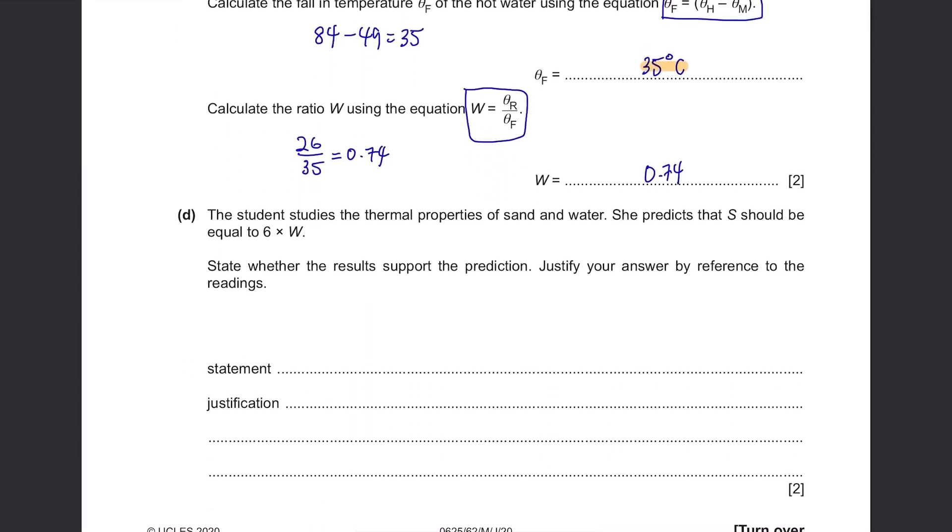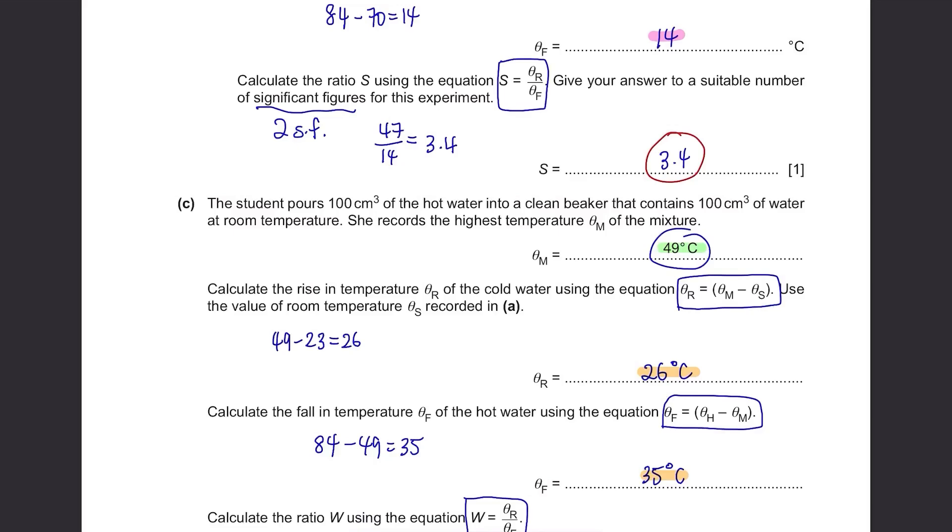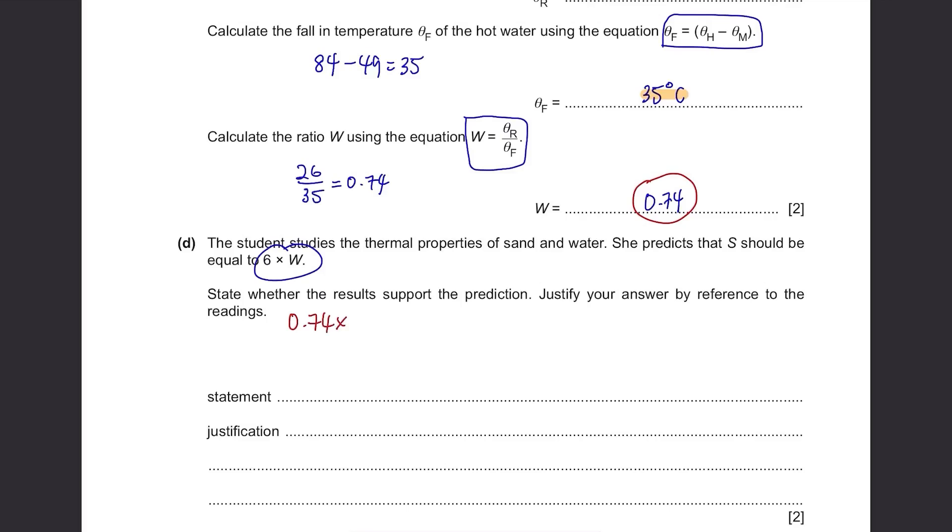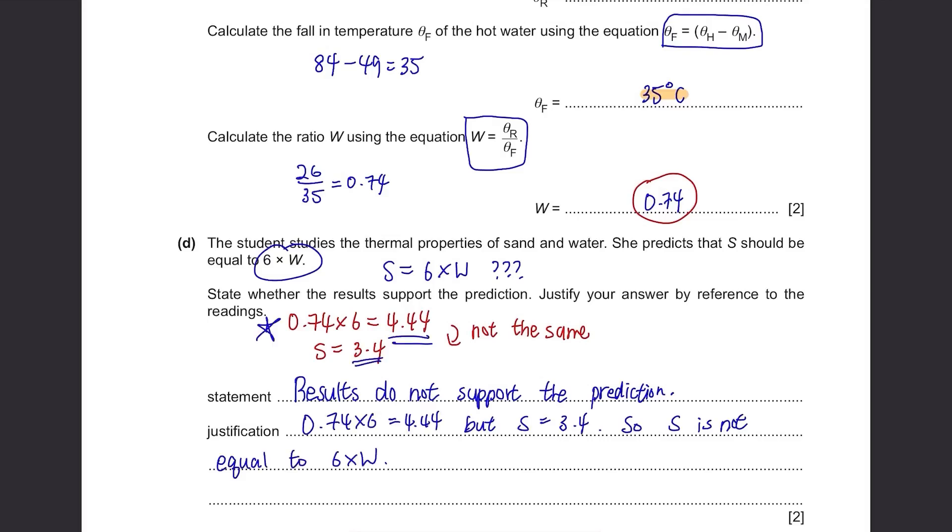Part D. The student studies the thermal properties of sand and water. She predicts that s should be equal to 6 times w. State whether the results support the prediction. Justify your answer by reference to the readings. We calculated s just now and it was 3.4. W was 0.74. While if you multiply 0.74 with 6, you get 4.44 which isn't very close to 3.4. So you can say the results do not support the prediction. Justification is that if you multiply w with 6 which is 0.74 times 6, it's 4.44 but the value of s is 3.4 so the values do not match. This answer depends on your answer for s and w but for correct answers of s and w, this can be the answer.